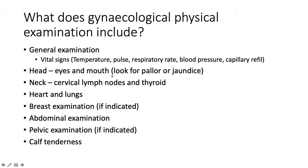After general examination, move on to examination of the head. Look at the eyes and mouth. For the eyes, pull down the lower eyelids and look for any signs of anemia — pallor means the conjunctiva looks pale, indicating anemia — or any yellowness indicating jaundice.